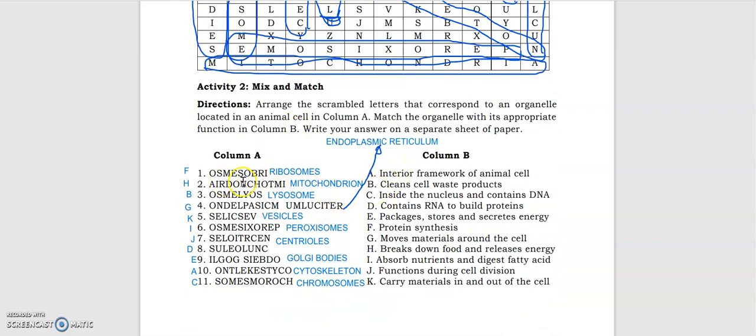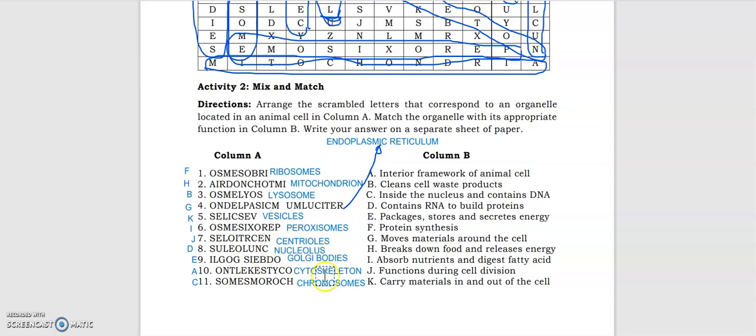All right, this is the ribosomes, mitochondria, lysosome, endoplasmic reticulum, vesicles, peroxisomes, centrioles, oh I forgot this one, this is nucleolus, the Golgi bodies, the cytoskeleton, the chromosomes. They have the answers here.